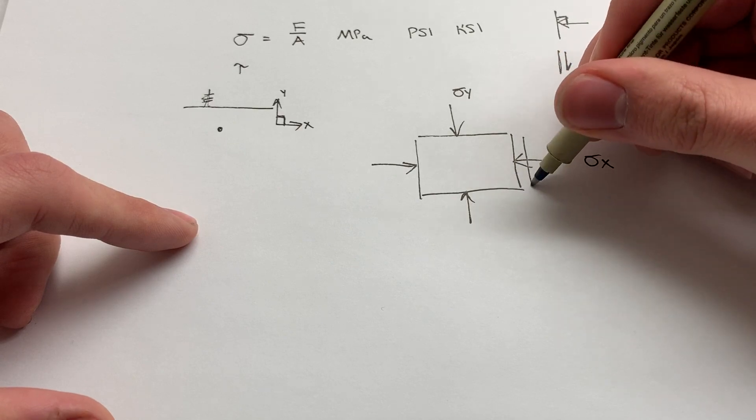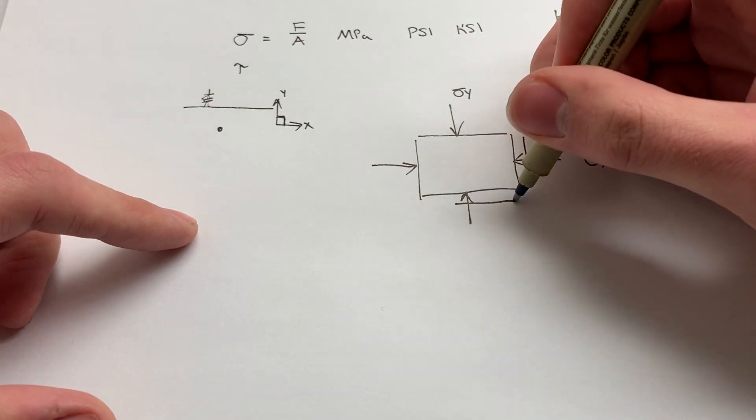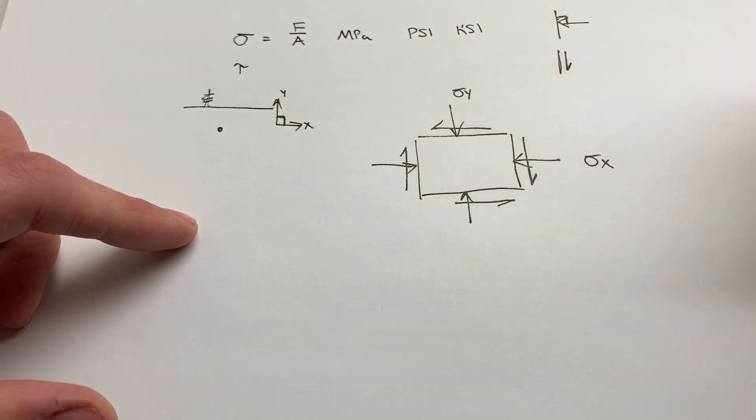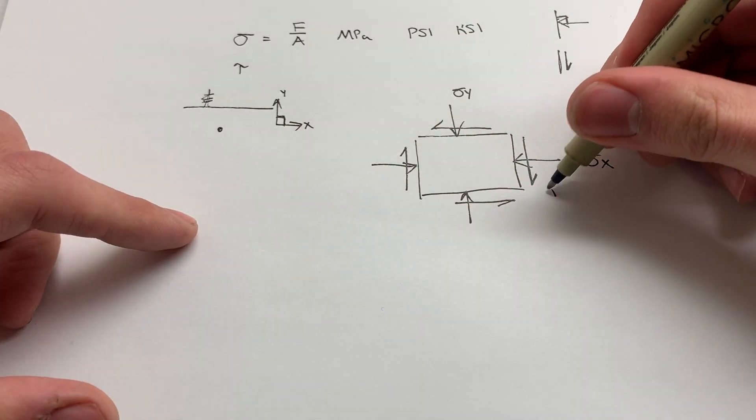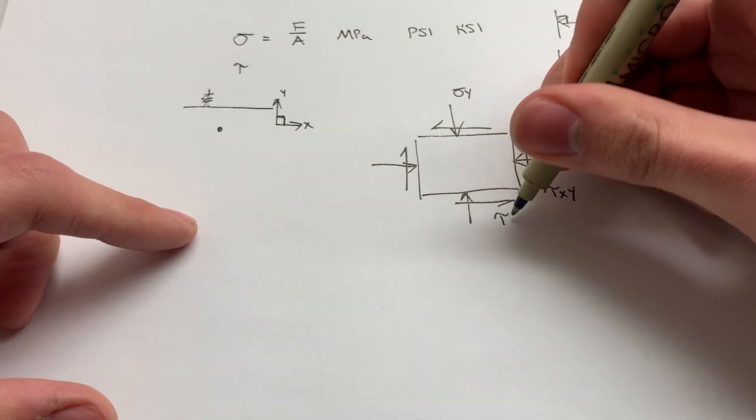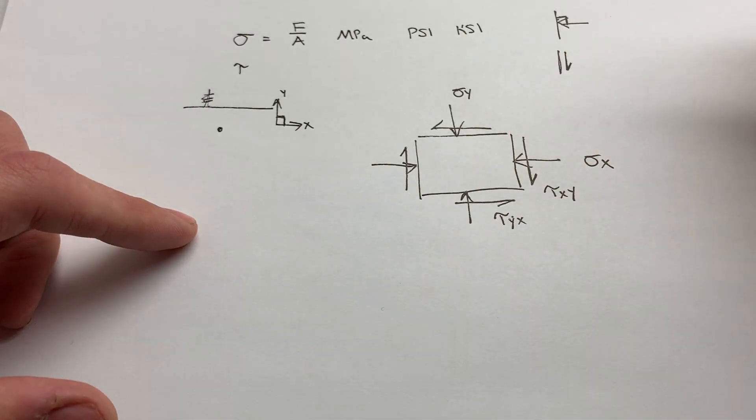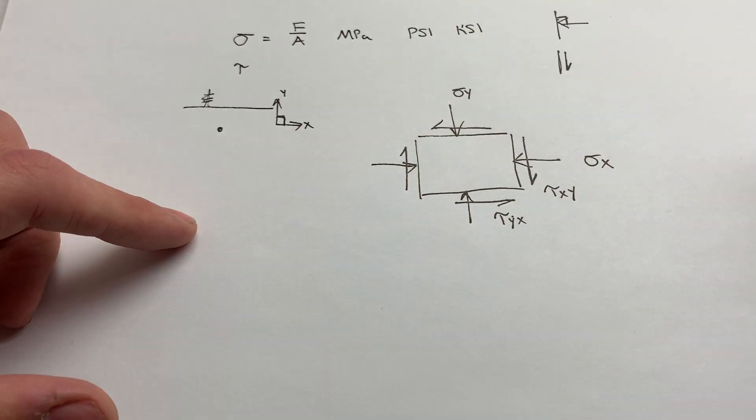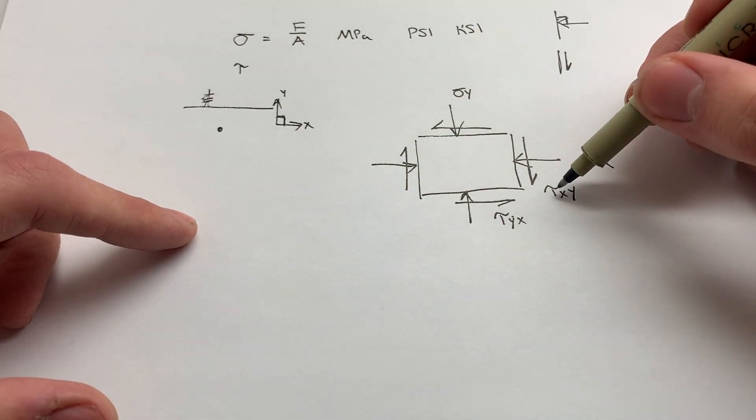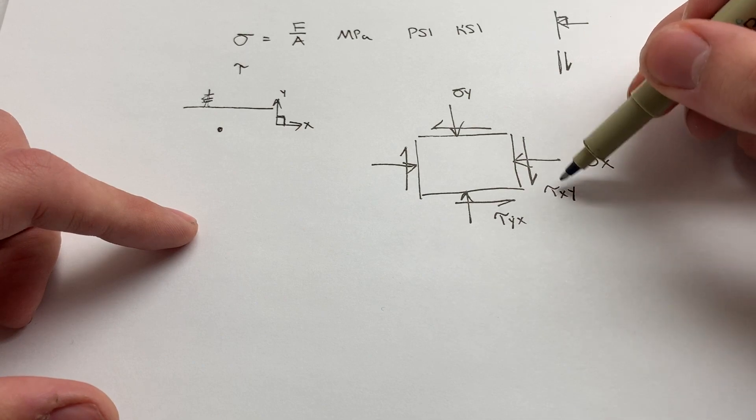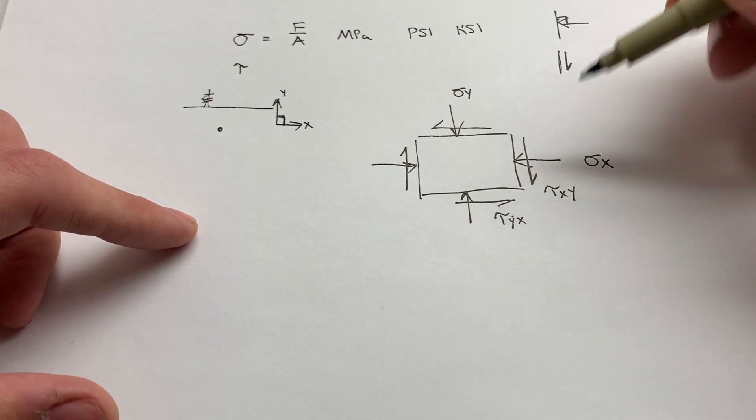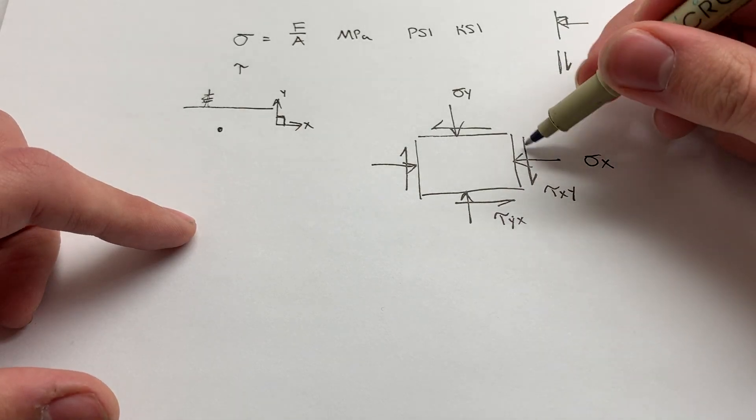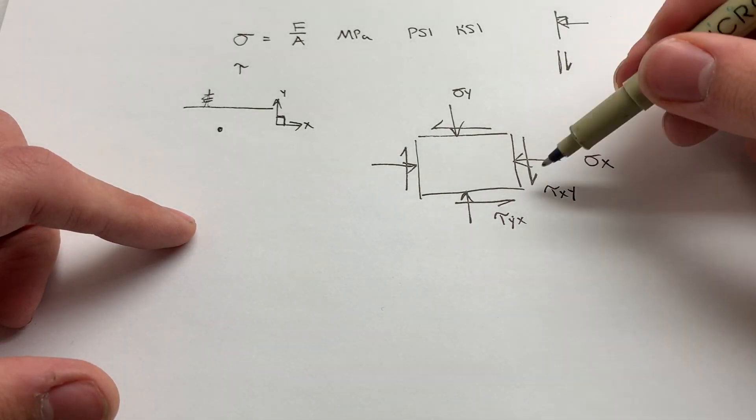For the shear stresses, we just draw them like this. And they're acting parallel to these surfaces. And we call this tau xy and this tau yx. And then their counterparts, tau yx is here, tau xy is there. And the convention we use for this is we would say this is tau on the x-plane acting in the y direction. So the second letter here is most useful to me. I like to think of it as it's going in the y direction. It's going vertically.